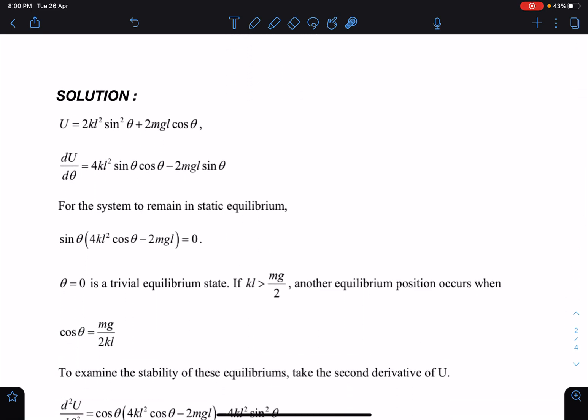Theta equal to 0 is one of the possible solutions. And here you can say, let's check the double derivative. And another equilibrium, they are mentioning here, another equilibrium is mentioned here as mg/2kl. But for this to take place, surely you can say cos theta is less than 1, or you can say whenever mg is less than 2kl, then theta equal to cos theta equal to mg/2kl will be another equilibrium situation.